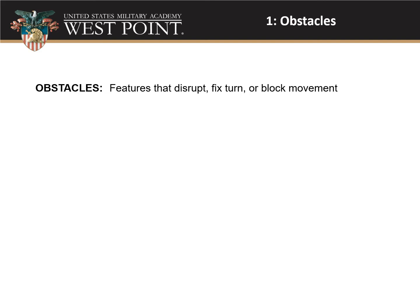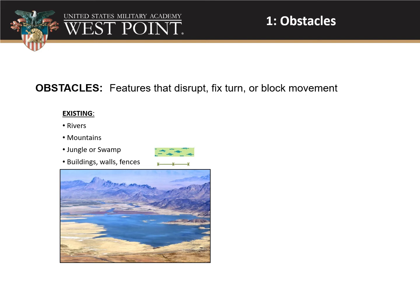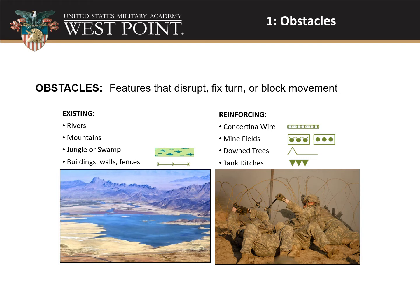Obstacles are features that are going to disrupt, fix, turn, or block your movement. They can be broken down into existing obstacles — things like rivers, mountains, swamps, buildings, fences — parts of the terrain already there, not specific to military operations. The second kind is reinforcing obstacles: things military forces put in place to create even more of an obstacle, such as concertina wire, minefields, abatis (downed trees across the road), and tank ditches.